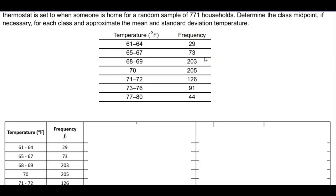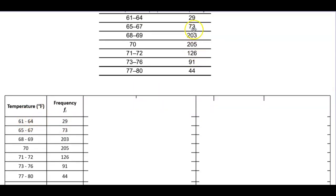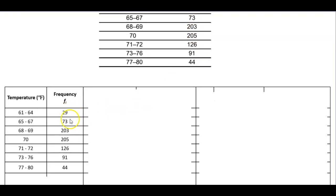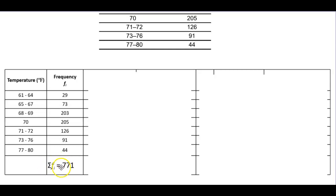We are going to create a table. On the left-hand side we have our temperature classes, and then we have our frequency, which is also given. The first thing we want to do is find the sum of the frequencies. When we add up 29 all the way to 44, the sum of all the frequencies is equal to 771.